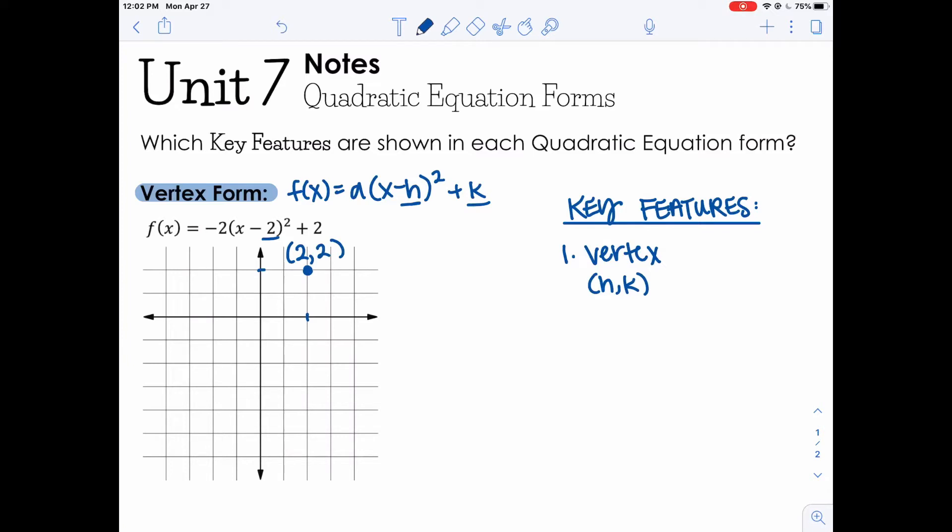What else does this tell me? Right, the other thing here is the a value. And the a value tells me the width of my graph. It also tells me whether it opens up or down. In addition to that, it tells me whether I have a minimum or a maximum. So vertex form actually gives us a lot of useful information. And I can actually create the whole graph based on vertex form. Now I know that my stretch factor is 2, so I'm going to stretch it down by 2. Typically we would go over 1, down 1.